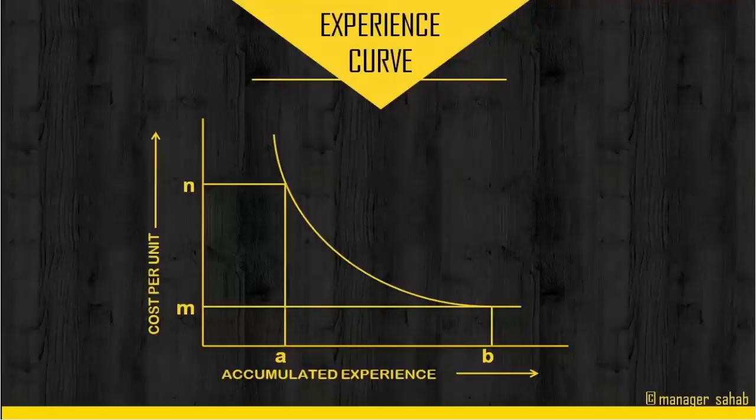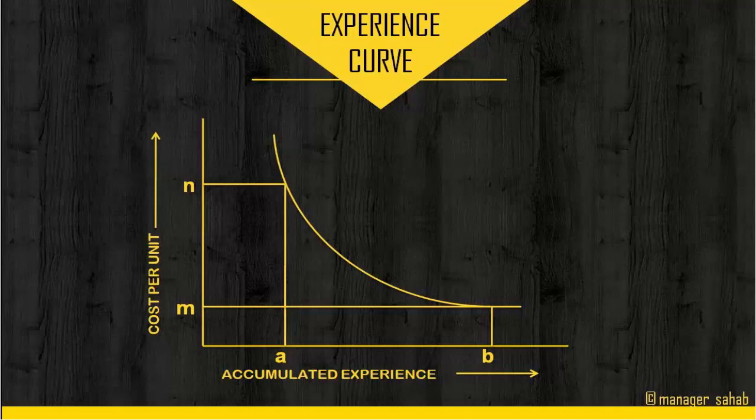Now we'll see how the experience curve looks. The vertical axis of this diagram is the cost per unit; the horizontal axis represents accumulated experience, years of working, or production volume. When production is at point A, cost per unit is N, and with the advent of time when production reaches point B, the cost per unit tapers down to M.